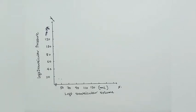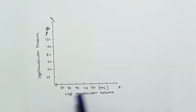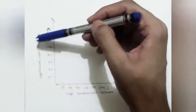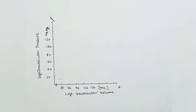Today we will understand the graph between pressure and volume of the left ventricle. On the x-axis we have left ventricular volume in ml, and on the y-axis we have left intraventricular pressure in mmHg.